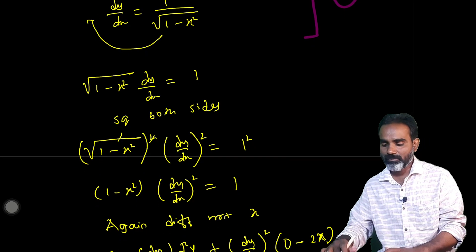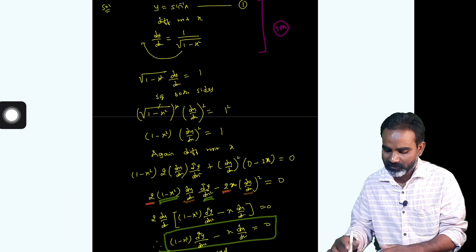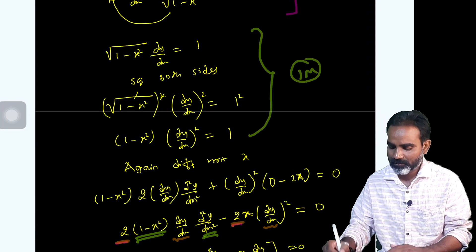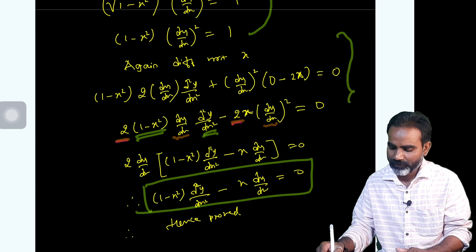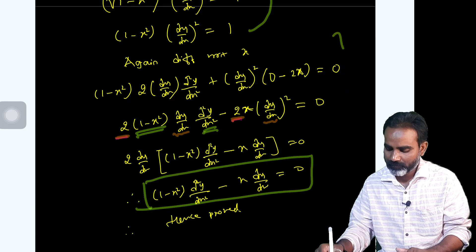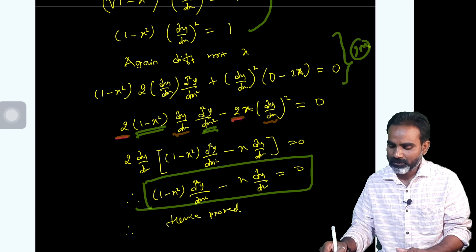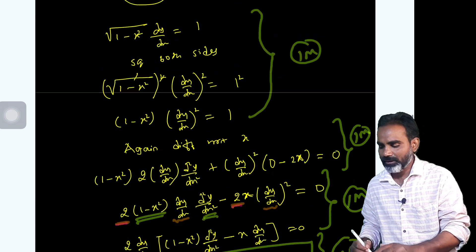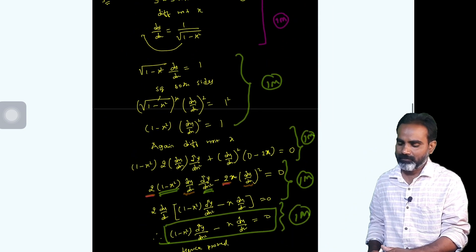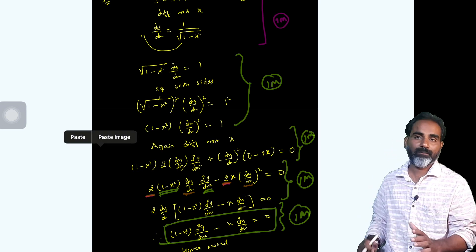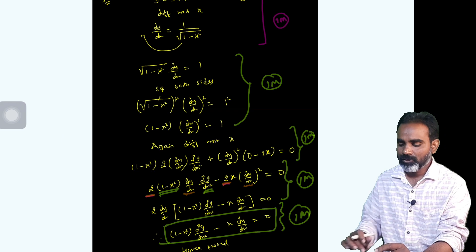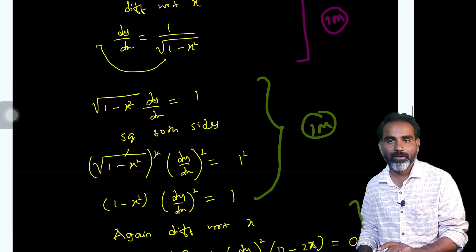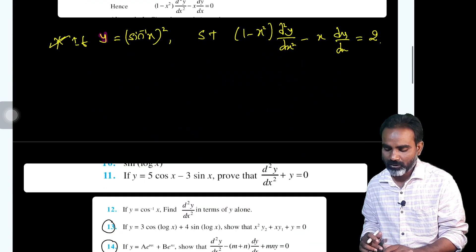Therefore: 1 minus x squared times d squared y by dx squared minus x times dy/dx equals 0. Hence proved. Now observe the marks distribution — 1 mark here, 1 mark here, and if we get a correct final answer, 1 mark. It totally depends on the paper setter.